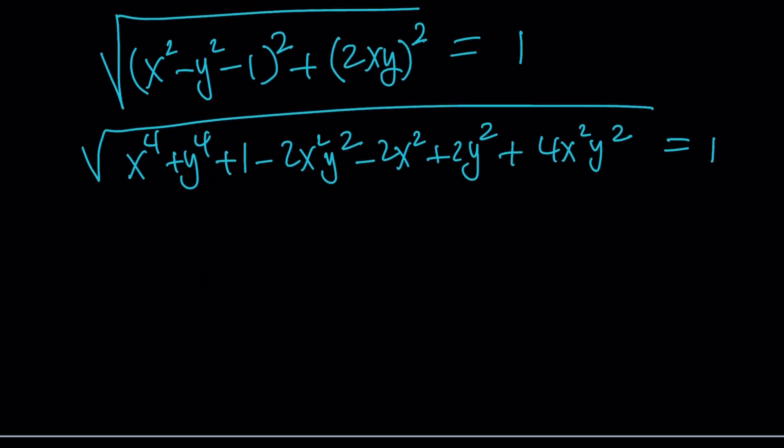We can now, I think, get rid of the radical square both sides because one squared is one. So we can totally forget about this and it's still going to be one. And now we get something interesting here. Look at that.